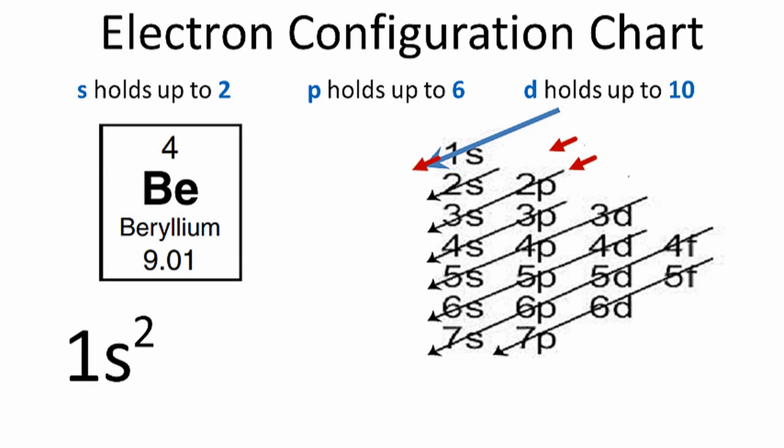We'll go to the next row, where we have the 2s. The 2s can hold two, and at this point, we've used four electrons, and that's all the electrons we have for beryllium.